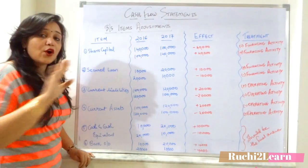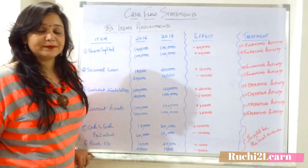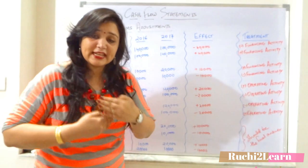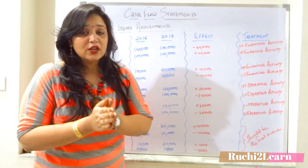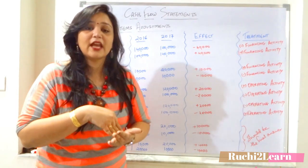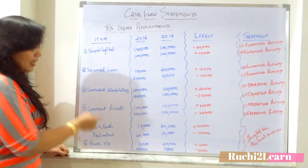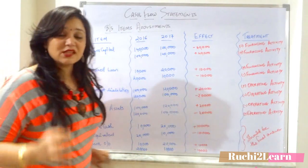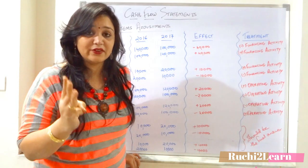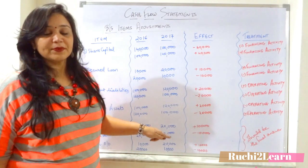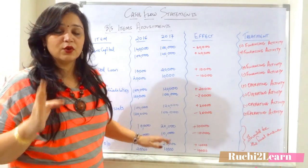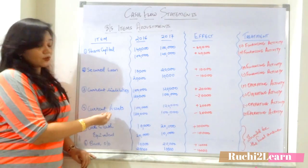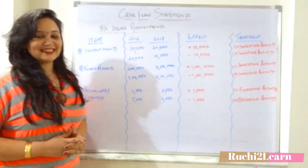One important point where some students make mistakes: current assets will not include cash and cash equivalents, because that is what we are finding. The cash flow statement finds the increase and decrease in cash. The change in cash and cash equivalents — and in bank overdraft — should be your final answer. The sum of financing, investing, and operating activities should equal the change in cash and cash equivalents and the change in bank overdraft. Do not include cash and cash equivalents when calculating current assets for operating activities.